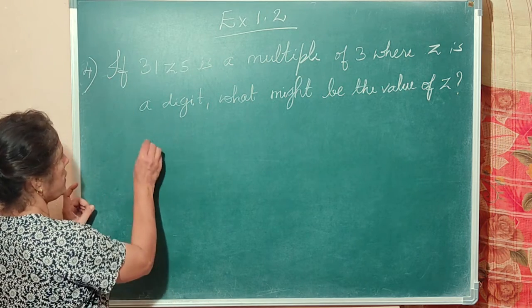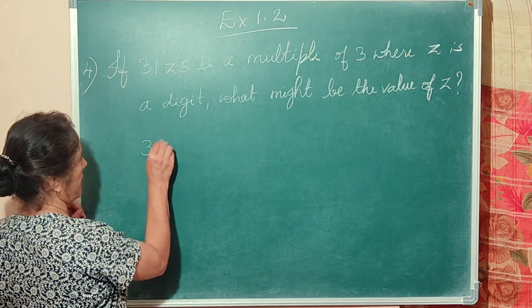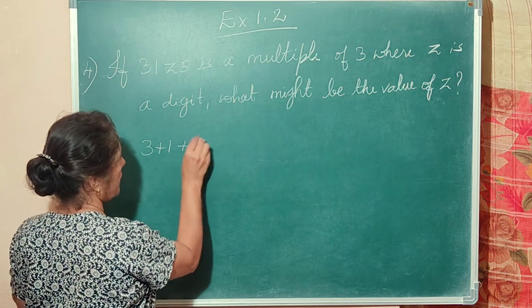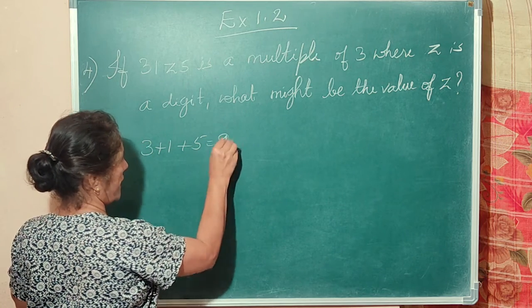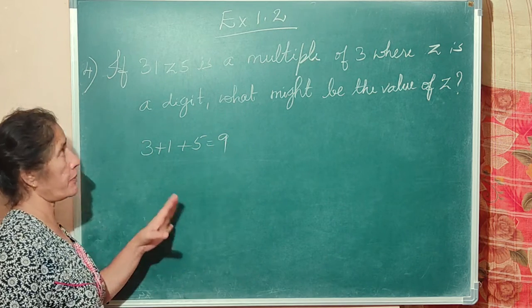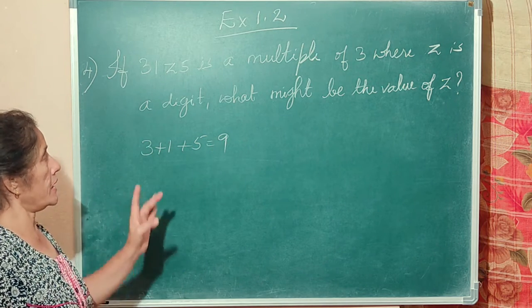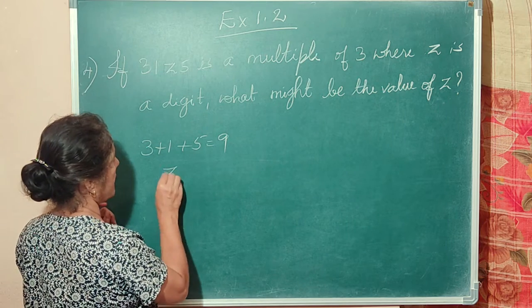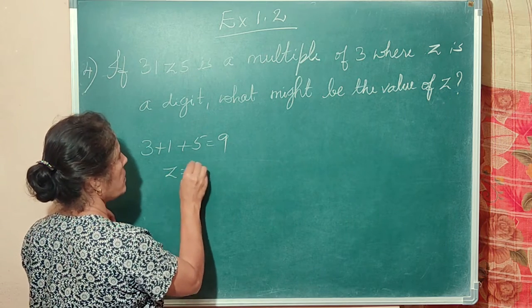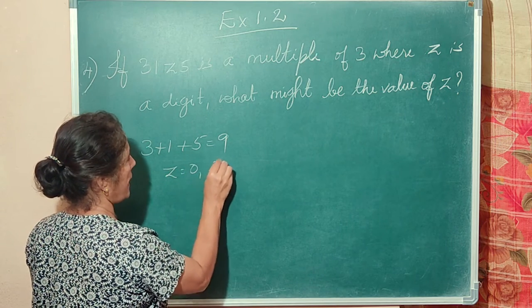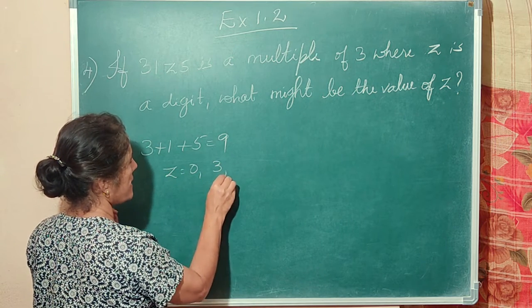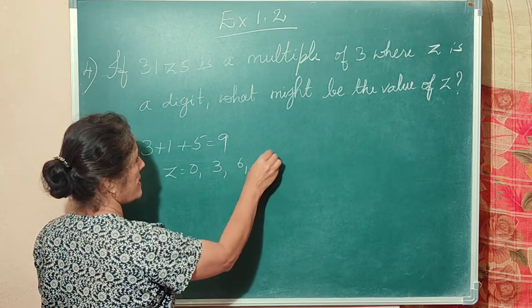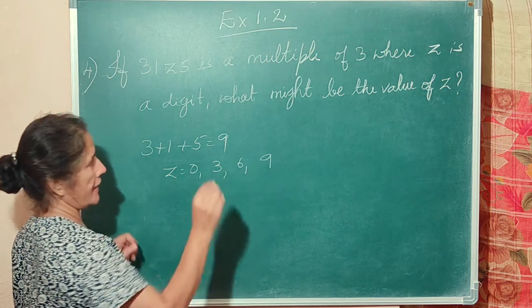So let us add: 3 plus 1 is 4, plus 5 is 9 — already a multiple of 3. So z can be 0, z can be 3, z can be 6, z can be 9.